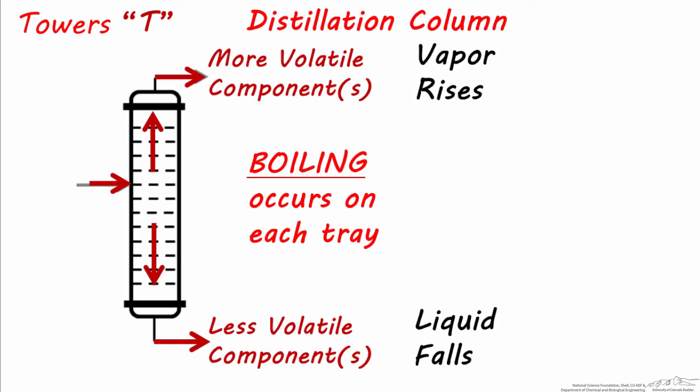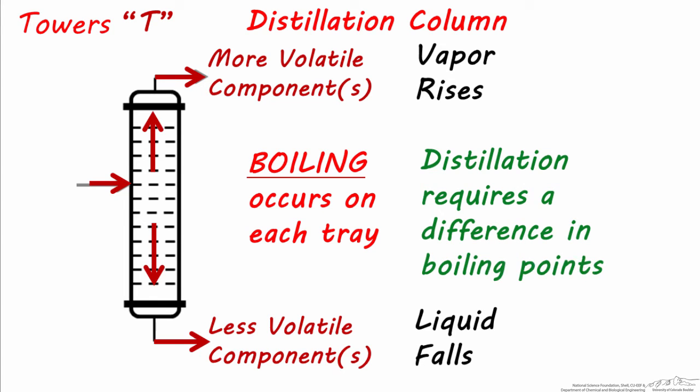Distillation is one of these processes that requires a vertical column. Some separation units can operate as rotating drums or horizontal beds, but distillation works through vapor rising and liquid falling, so there must be a vertical column. So distillation will always be designated as a tower on a process flow diagram. Also since components are separated by boiling them, there must be a difference in boiling points between components in order to effectively separate them using distillation.